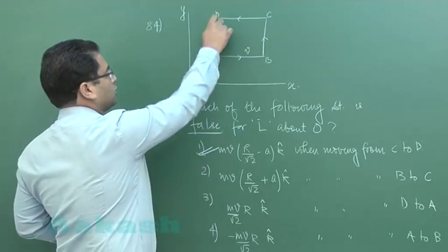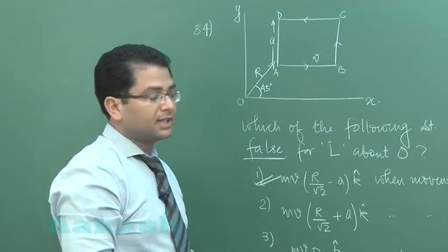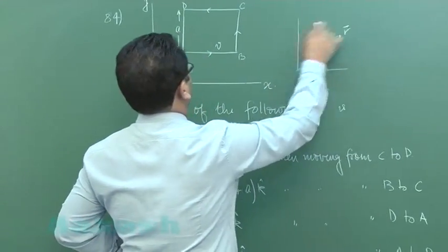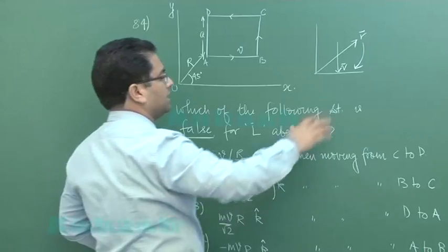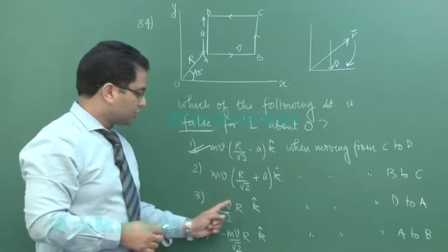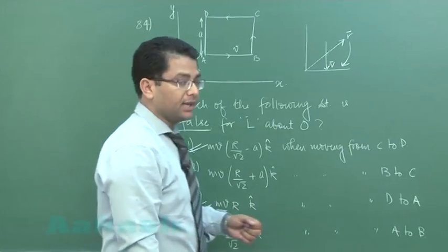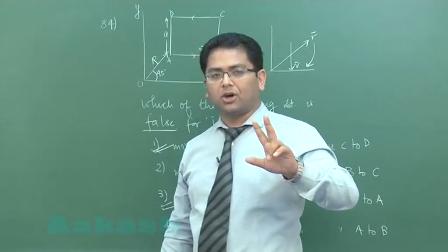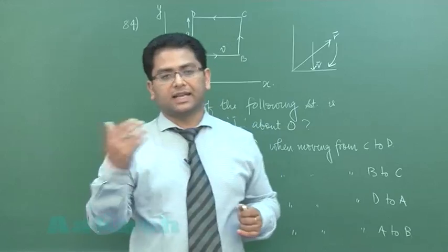Now option 3: from D to A, the perpendicular distance is R by root 2 so the magnitude part is correct. Let us see the direction when it comes from D to A: this is the R vector and this is the velocity vector, so R cross P the screw would go inside which is minus K cap, however the direction given is plus K cap so this is a wrong value and we need to choose the false. This is the question where inadvertently there are two possible options which have crept into.